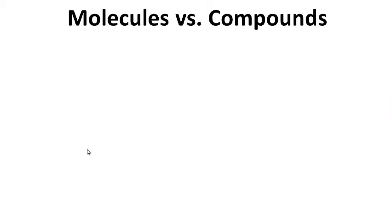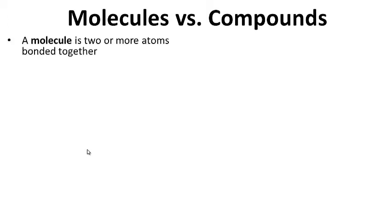Molecules versus compounds — there's a slight difference. Most of the time they're the same thing, but there is a difference. The other day we learned about the seven naturally occurring diatomic molecules. Those are molecules, but they're not compounds.